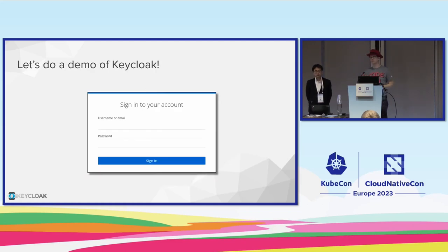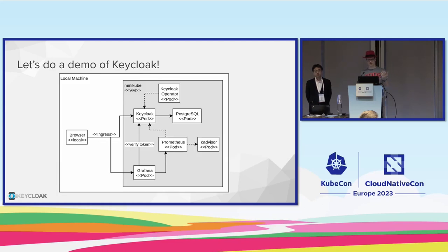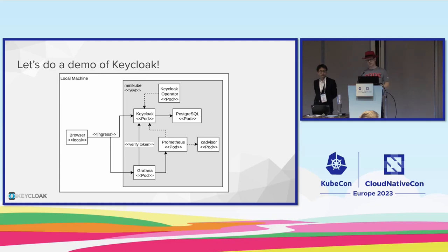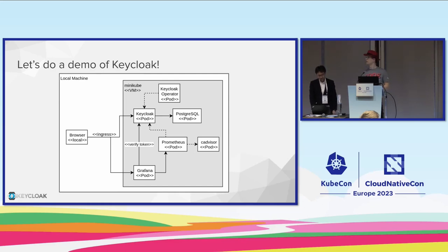Let's do a demo of Keycloak. The setup we'll walk through has everything running on my laptop in Minikube. We use the browser to interact with Keycloak's login screen. We'll see Grafana and configure single sign-on for Grafana using Keycloak. Prometheus can pull metrics from Keycloak so we know what's going on inside. Keycloak connects to a PostgreSQL database, and of course Keycloak is deployed using the Keycloak operator. These are the moving parts we're about to see in this demo.